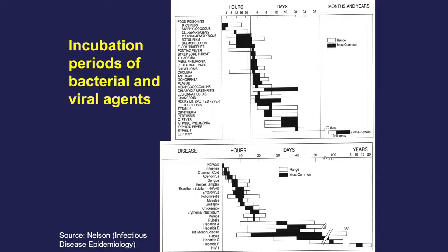This slide shows how incubation periods of infectious diseases vary from agent to agent — bacterial infections on the top panel and viral infections on the bottom. For bacterial infections, incubation periods generally vary from hours to days, with the exception of leprosy. There is more spread for viruses, and the average incubation period for HIV infection is an outlier at about 10 years between infection and first exhibiting symptoms of AIDS. Even within a single agent, the incubation period can be quite variable, as shown by the range of the black bars.